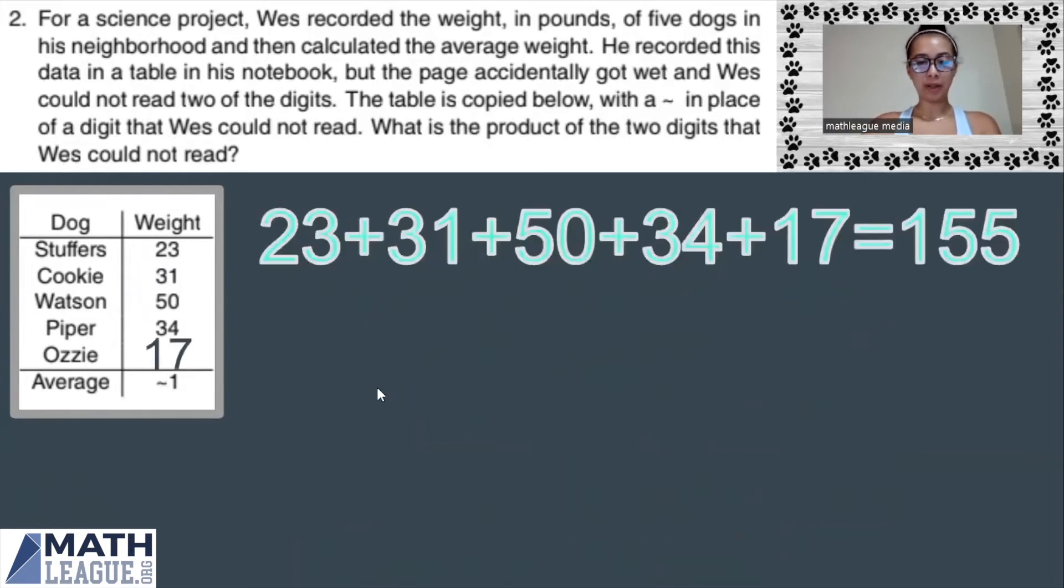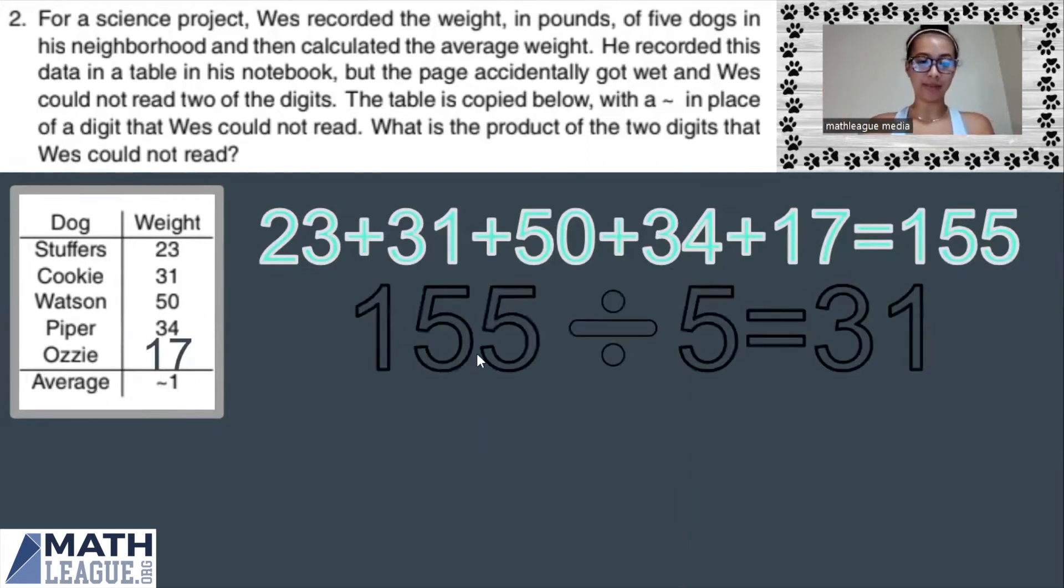Now we know how much Ozzie weighs, 17 pounds. We can add all the five weights together, which sums up to 155 pounds. Take the average. We know that the average is the sum of all the data points divided by the number of data points, which is going to be 155 divided by five equals 31. So our average is 31.